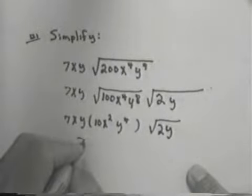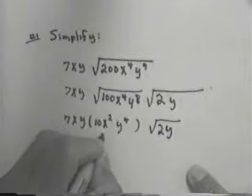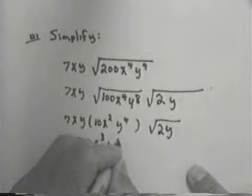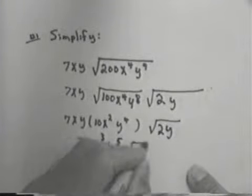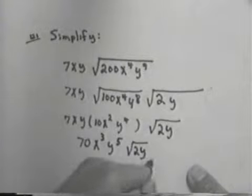So that would be 70x cubed, y to the 5th, times the square root of 2y.